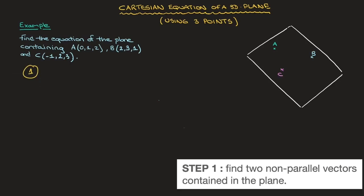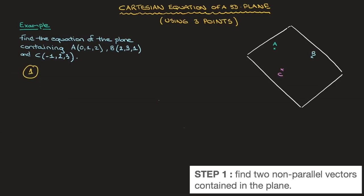Step one: find two non-collinear or non-parallel vectors that are contained in the plane. To do that, we use the three points that we were given. We have the coordinates of point A, those are 0, 1, 2, as well as the coordinates of point B, 2, 3, and 1, as well as those of C, which are negative 1, 2, and 3. So I'll go ahead and define the vector AB as well as the vector AC.